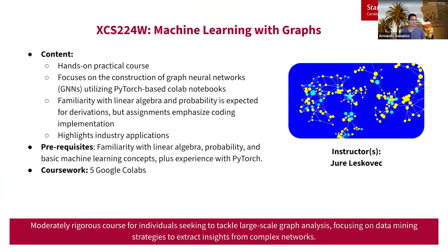Next we have XCS 224W, Machine Learning with Graphs. This is a moderately rigorous course for individuals looking to tackle large-scale graph analysis, focusing on data mining strategies to extract insights from complex networks. There's a hands-on, practical feel — you'll be working on Colab notebooks experimenting with the algorithms discussed, and it highlights industry-level applications. Familiarity with linear algebra, probability, and basic machine learning concepts is encouraged, and experience with PyTorch is a plus. There are a total of five Google Colabs for this course.